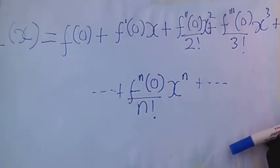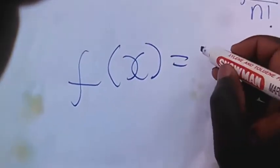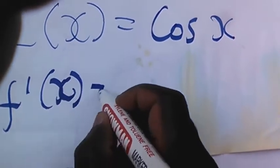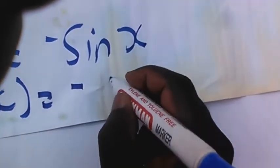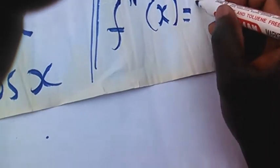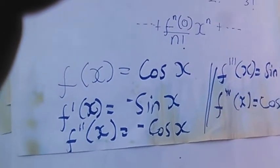If we try an example, if our f(x) is cos(x), we shall first get f prime of x, which will be negative sin(x). We shall also get f double prime of x, which is negative cos(x). Then f triple prime of x, which is sin(x). Then the fourth derivative of x, which will be cos(x). And the fifth derivative, which will be negative sin(x), and so on.